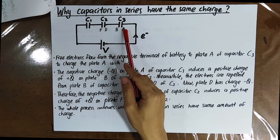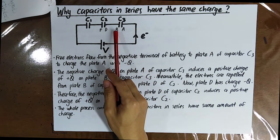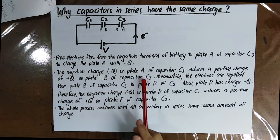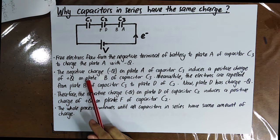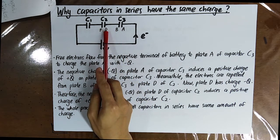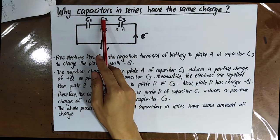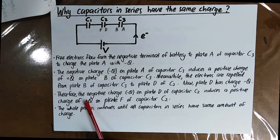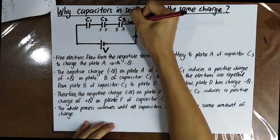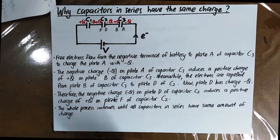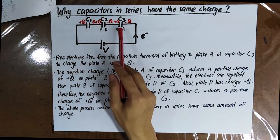The negative Q on plate A will induce another charge on plate B, so that plate B will have a charge of positive Q. When capacitor C3 has a positive charge on plate B, the electrons are repelled from plate B to plate D of capacitor C2, and plate D will have a negative charge of negative Q. So the amount of charge is the same in all capacitors in a series.